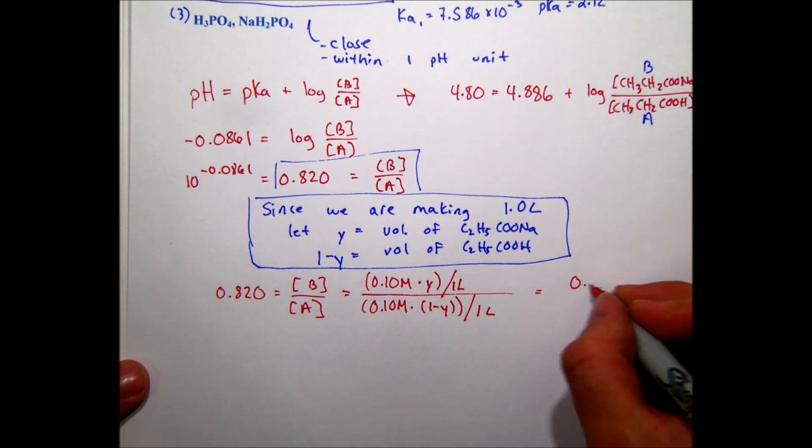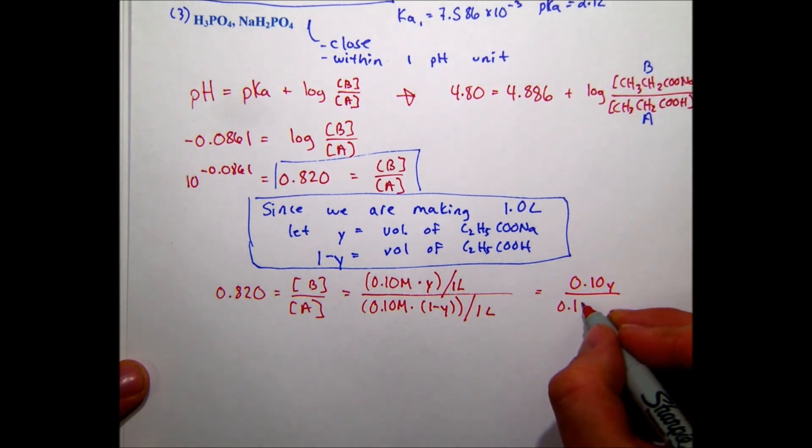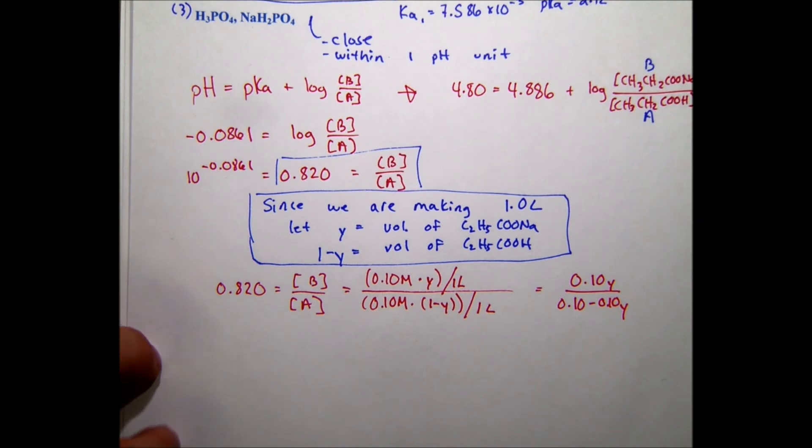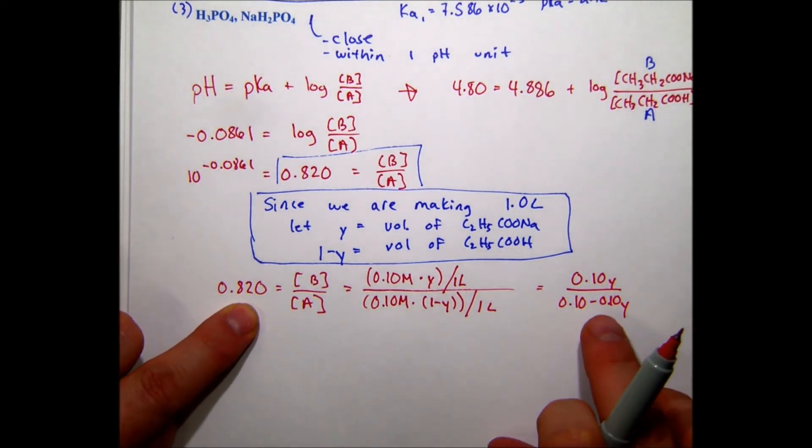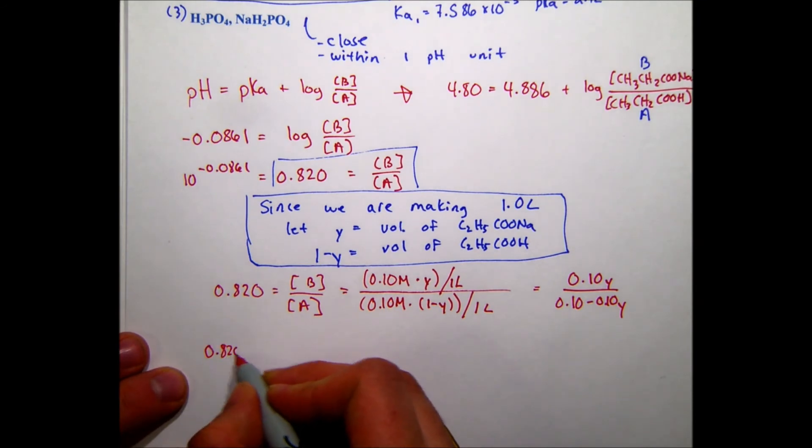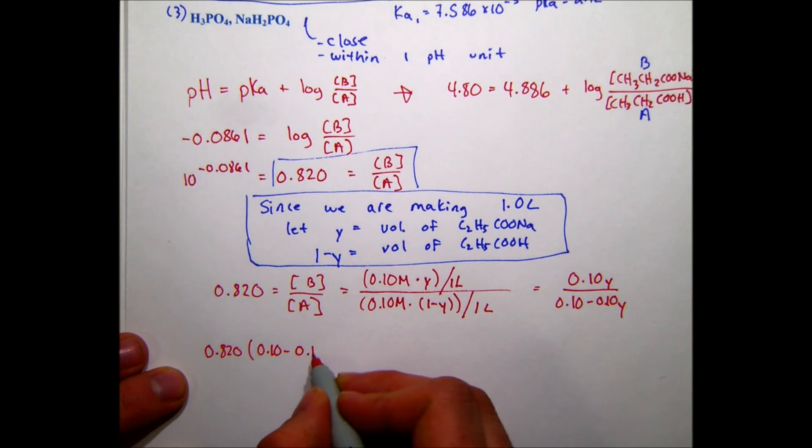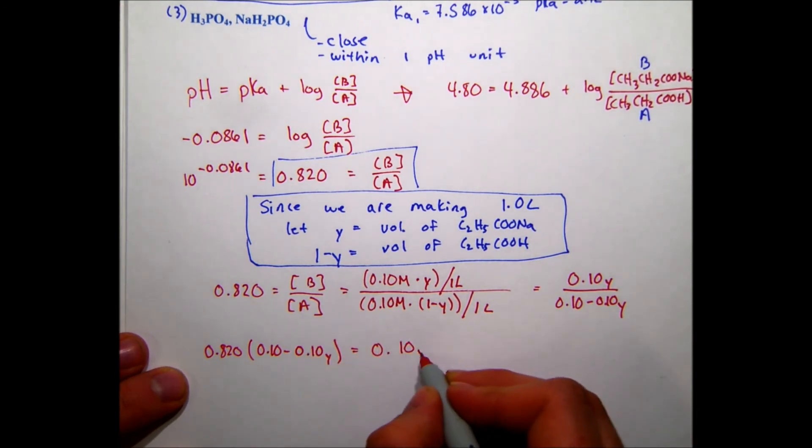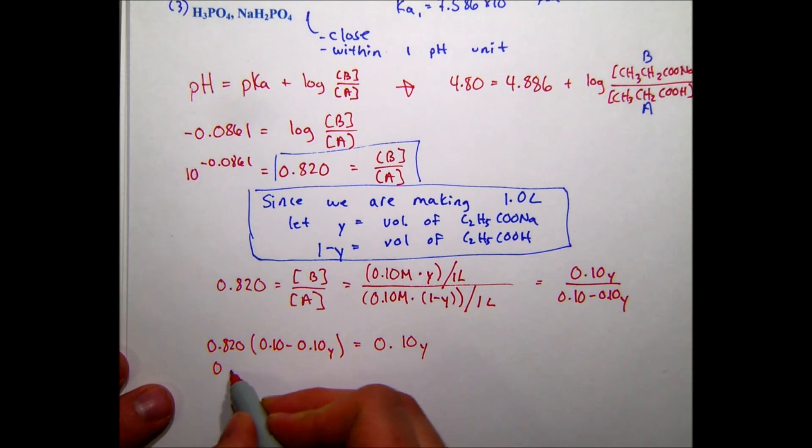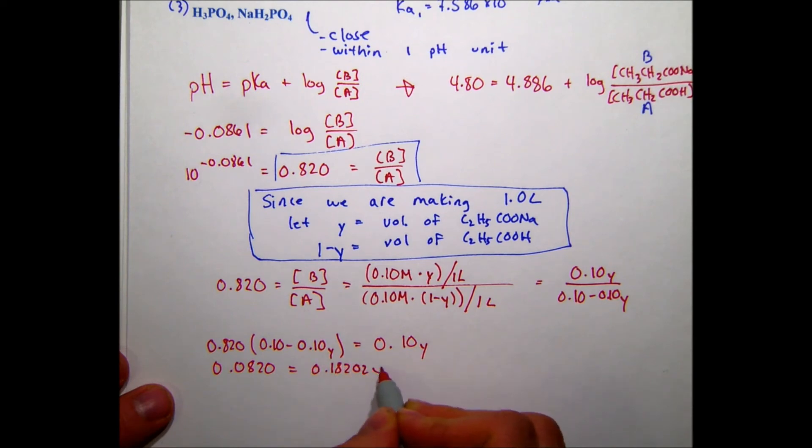So when we work this out, it will be 0.10 y over 0.10 minus 0.10 y. So remember that 0.820 is equal to this. So what I'm going to do is multiply this whole bottom by 0.820, and that's just equal to this.